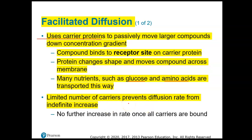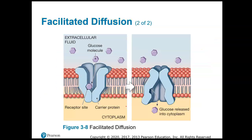The number of carriers determines how much glucose or amino acids are moved across — if there are only six carriers, only six molecules of glucose can be moved at a time. Here's your carrier protein in blue, and here's your glucose molecule. The concentration is high in the extracellular fluid and low inside the cell in the cytoplasm, so the carrier protein moves the glucose down its concentration gradient by binding to the receptor site, changing shape, and moving glucose in.